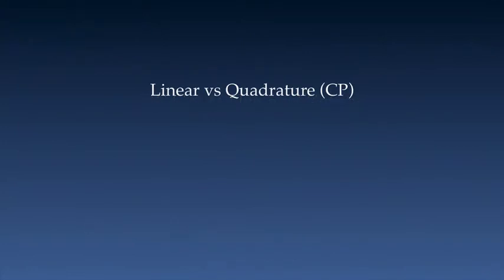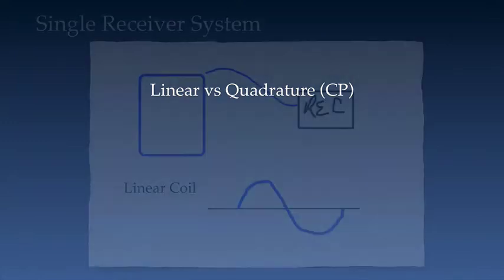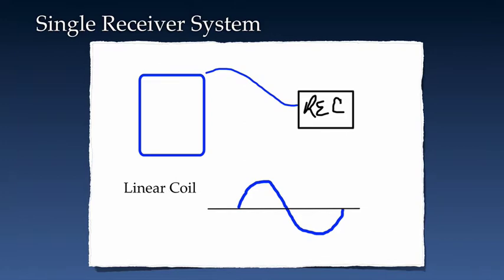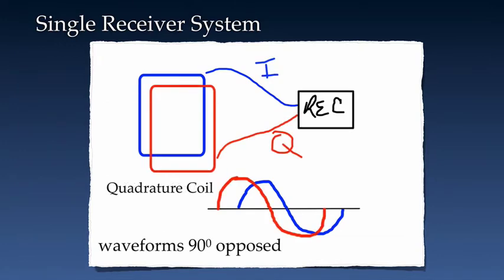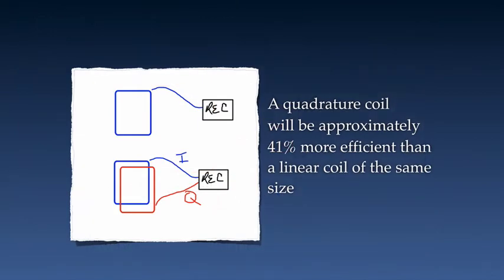The first thing I want to look at are the terms linear and quadrature. Remember, quadrature may also be referred to as circularly polarized. This diagram shows a simple single-element, single-receiver linear coil. The quadrature receiving coil will have two elements, and each element has its own channel going to the single receiver. The channels are named I and Q, and will receive waveforms that are 90 degrees opposed to each other. A quadrature receive coil will be approximately 41%, or square root of 2, more efficient than a linear coil of the same size, resulting in an increase in signal-to-noise ratio.